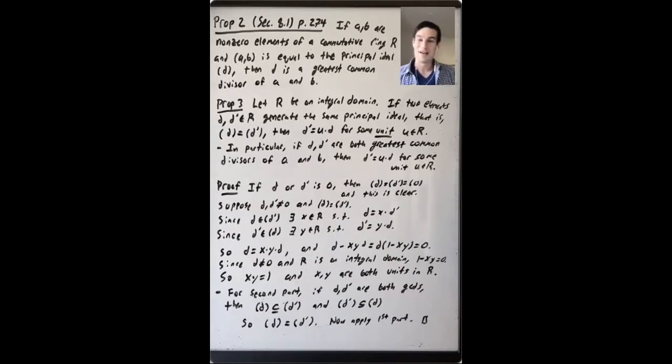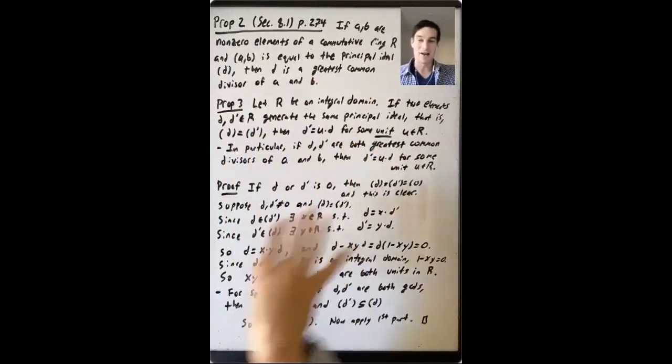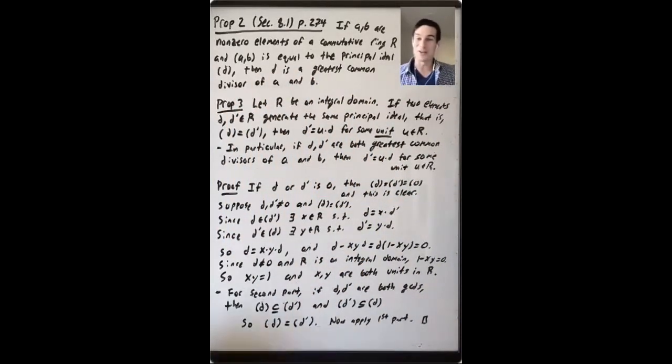So now that we have a slightly better general understanding of how GCDs work, we're going to go back and see how in the case where our ring is a Euclidean domain and we have this division algorithm and can apply it repeatedly, this gives us an algorithmic way to compute GCDs.